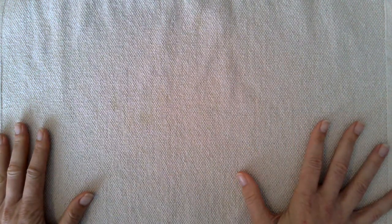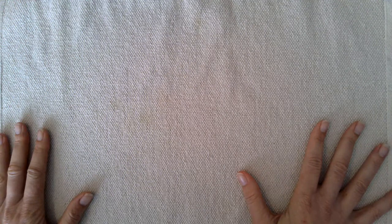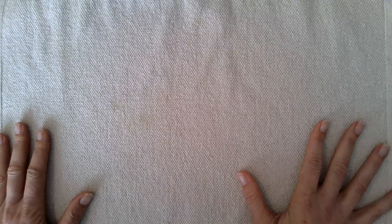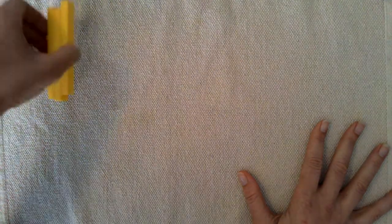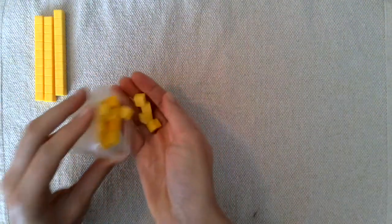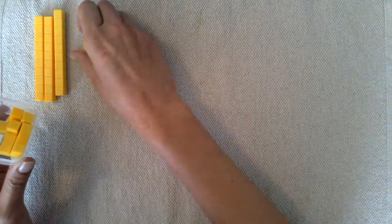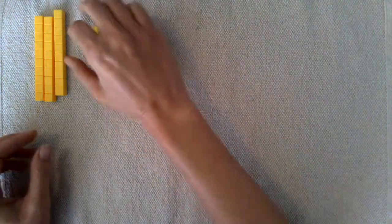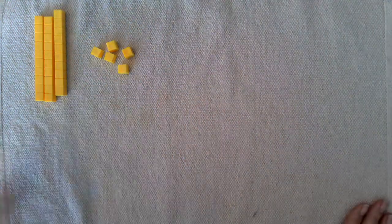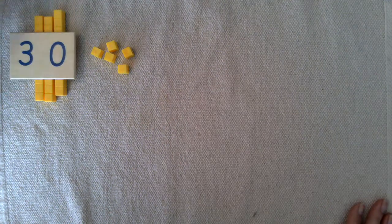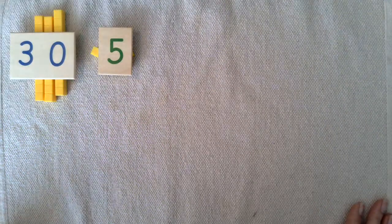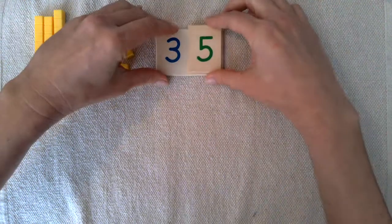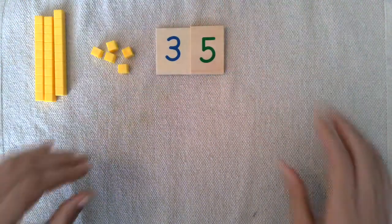Okay, so first we're going to start by having a child build one of the first addends, 35. So they'll grab three tens and five units, and then another child is going to make that with the number cards. So three tens, five units, they'll put them together just as with static addition.